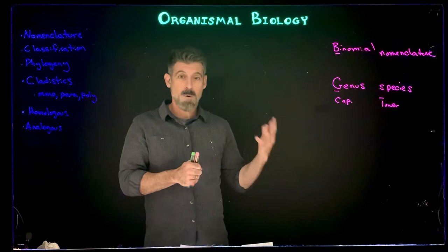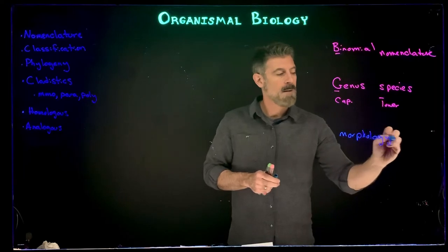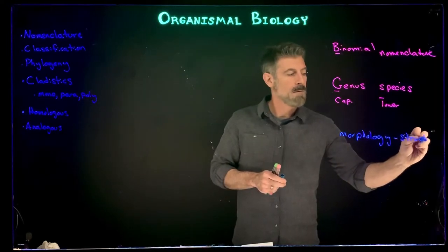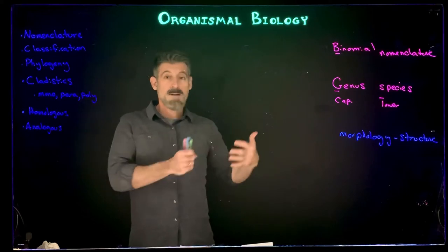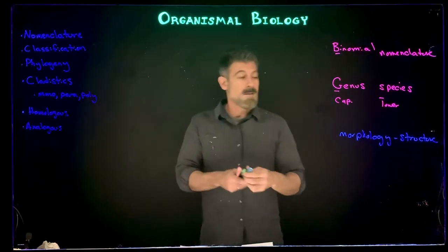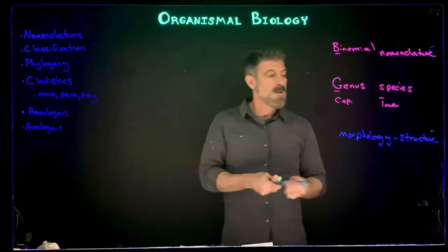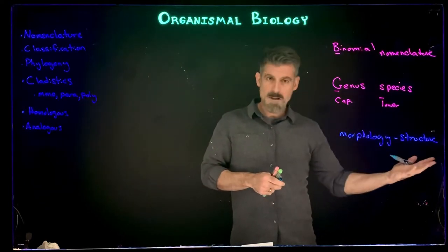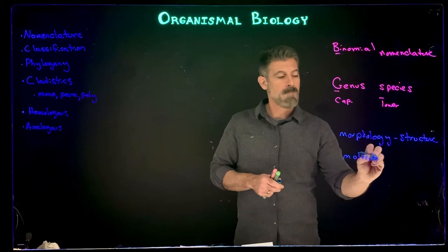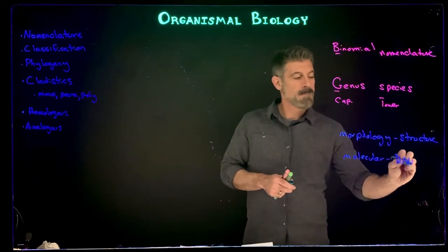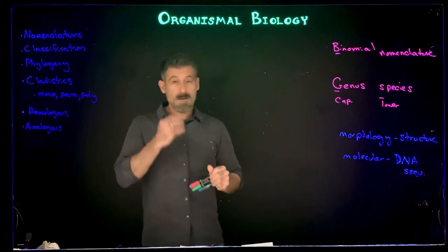Traditionally this was all done morphologically. Morphology is based on structure, and structures are formed because of the genetic material that directs their formation. However, there can be underlying genetic differences between organisms with no structural differences — or very little, or things we can't actually see. So morphology is sort of the history, and today we more often look at molecular evidence, like DNA sequencing, to assign organisms to groups, categorize them, and look at relationships.